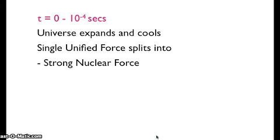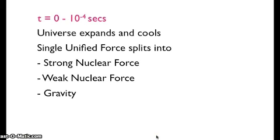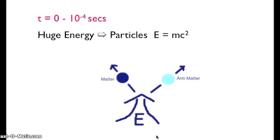That is the strong nuclear force, the weak nuclear force, gravity, and the electromagnetic force. The huge energy that was around meant that particles could be created according to the formula E equals mc squared, where E is the energy, m is the mass, and c is the speed of light.